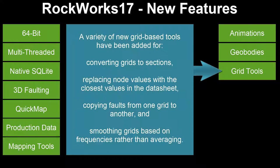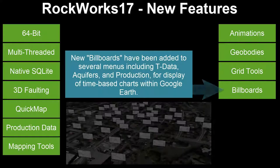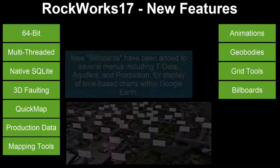A variety of new grid-based tools have been added for converting grids to sections, replacing node values with the closest values in the datasheet, copying faults from one grid to another, and smoothing grids based on frequencies rather than averaging. New billboards have been added to several menus including tea data, aquifers, and production for display of time-based charts within Google Earth.